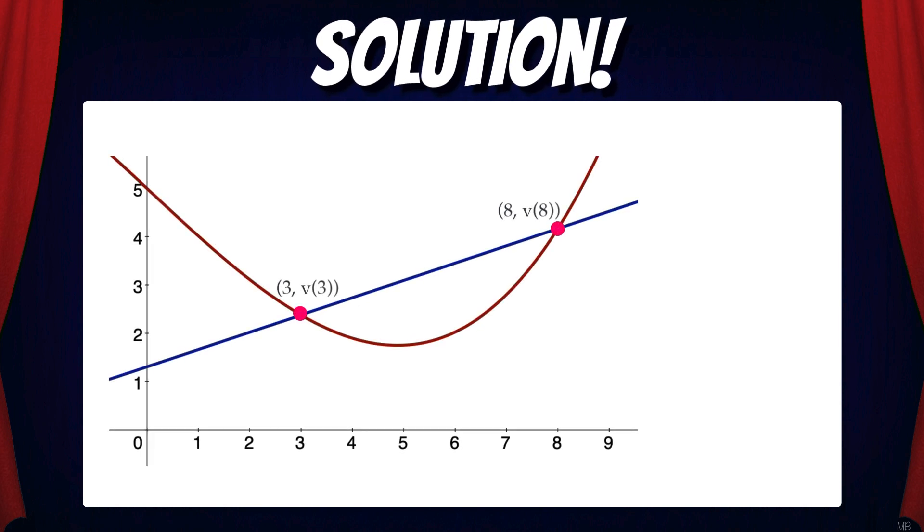So to find the average rate of change, we need to find the slope of the secant line that connects the two points. In this case, the name of our function is v(t), so we're going to use that and apply the average rate of change formula.